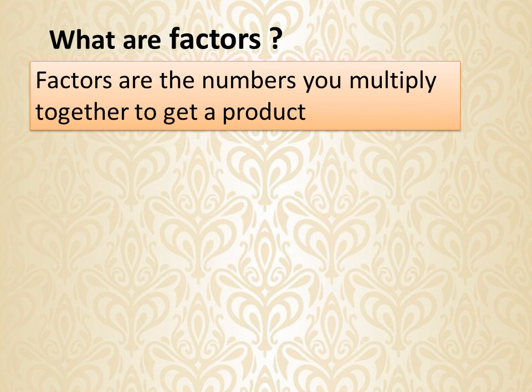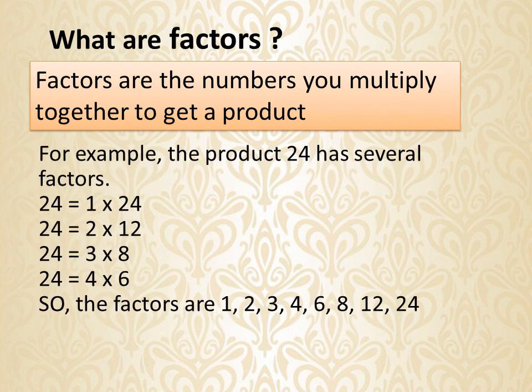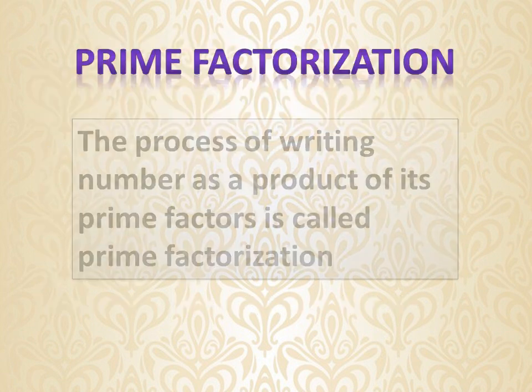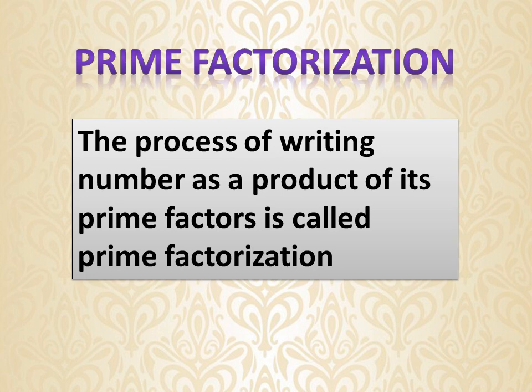Factors are the numbers you multiply together to get a product. For example, the number 24 has several factors. 1 × 24 = 24, 2 × 12 = 24, 3 × 8 = 24, and 4 × 6 = 24. So the factors of 24 are 1, 2, 3, 4, 6, 8, 12, and 24.